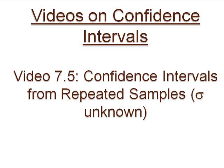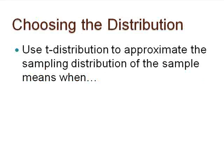Greetings to those interested in learning about confidence intervals. Last time we learned that we should use the t-distribution to approximate the sampling distribution of the sample means when the population standard deviation is unknown and when the sample data have no outliers or strong skewness.